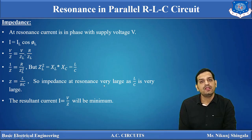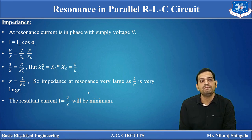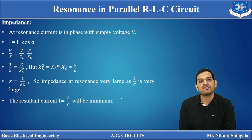This is exactly opposite to the series resonance circuit. In series resonance, impedance is minimum and current is maximum. Here, impedance is maximum and current is minimum. That is why this circuit is called a rejector circuit.